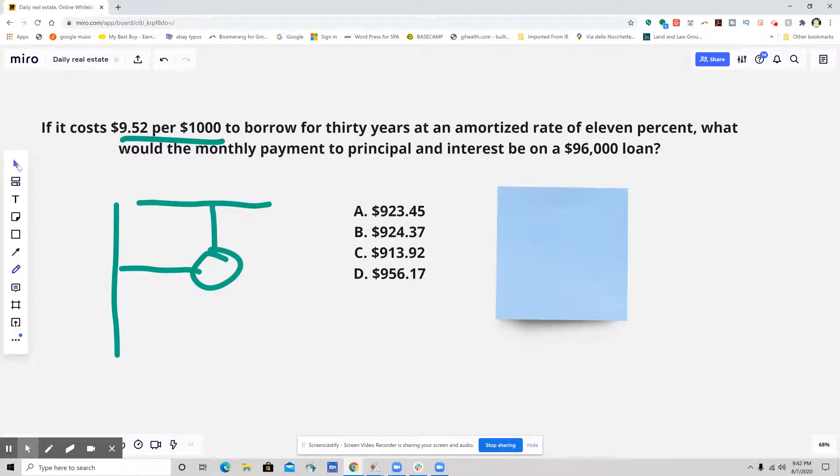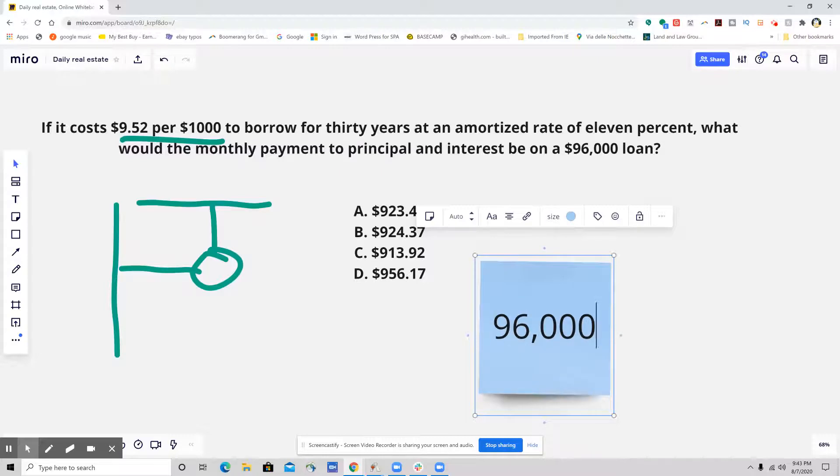But it looks like in this question it's been given to us. Let's now start doing the math. So the first thing that I would do is divide $96,000 by $1,000, because the payment that we have here is per $1,000.